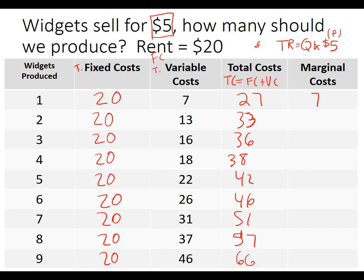Now I want to do marginal cost. Some students find it easier to subtract one total cost from the previous. What I like to do is focus on quantity, which changes by one each time, so the denominator doesn't matter. Marginal means additional — what is the additional cost of producing that next unit? Since fixed costs don't change, they don't really matter for management decision-making. The marginal costs are: 6, 3, 2, 4, 4, 5, 6, and 9.